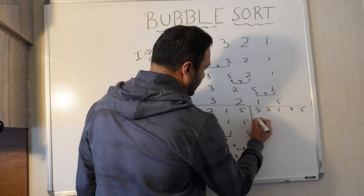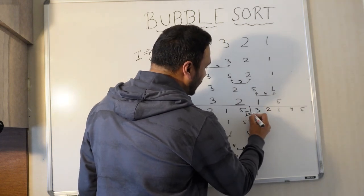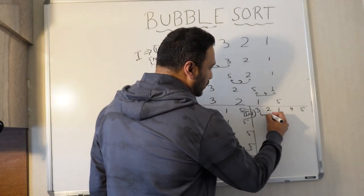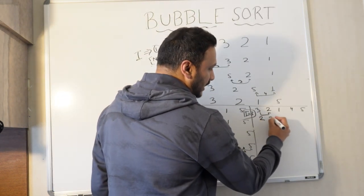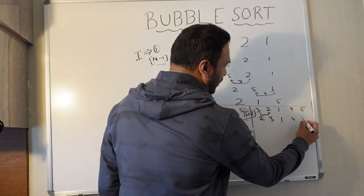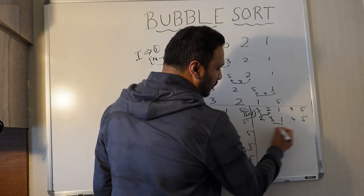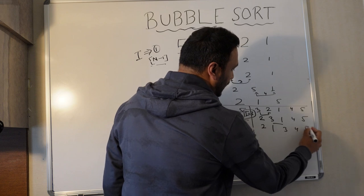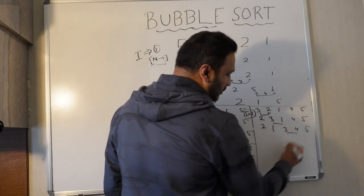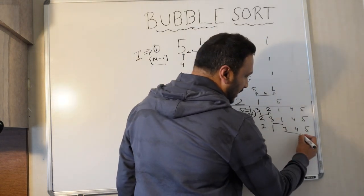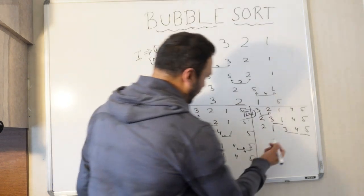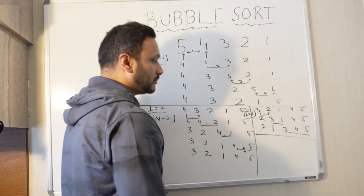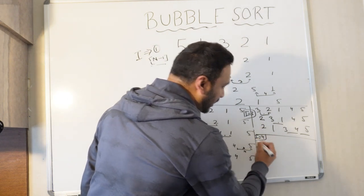In the third iteration where i equals 3, starting with [3, 2, 1, 4, 5]: check 3 and 2 — swap to get [2, 3, 1, 4, 5]. Check 3 and 1 — swap to get [2, 1, 3, 4, 5]. Then check 3 and 4 — no swap. Check 4 and 5 — no swap. We performed 2 swaps this iteration. Now for i equals 4, the fourth iteration.